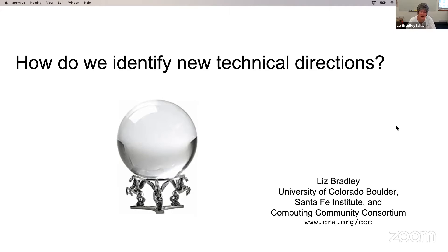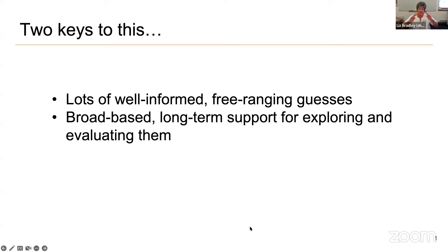The obvious challenge with identifying new technical directions is we don't have crystal balls. This is actually a picture of one I got off the Amazon website, but I don't think it takes care of ideation, unfortunately. So in the absence of crystal balls, everyone is making informed guesses. Many of those guesses will be wrong, but hopefully some will be right. The key in identifying new research directions is to increase the number of good guesses and to support them to fruition. That's blindingly obvious, but how? And there's the challenge.